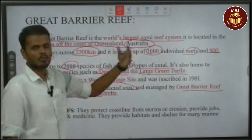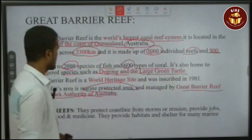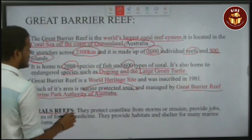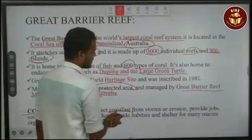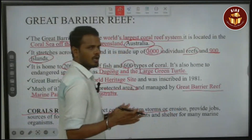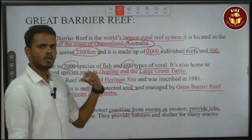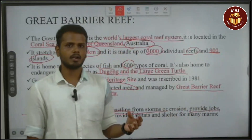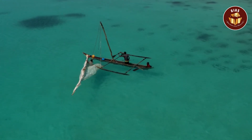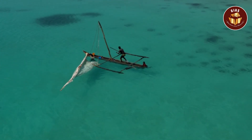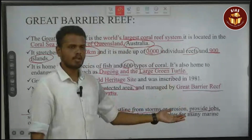The coral reef is the most important part of the marine protected area. It protects the coastline from storms. It also provides jobs in the community and supports the fishing population. There are also places for coastal people to find employment.